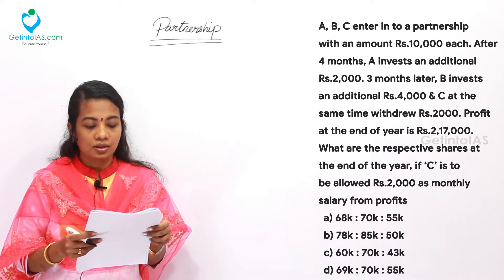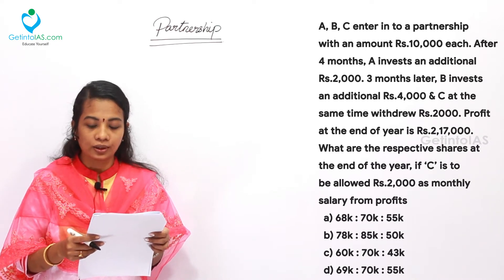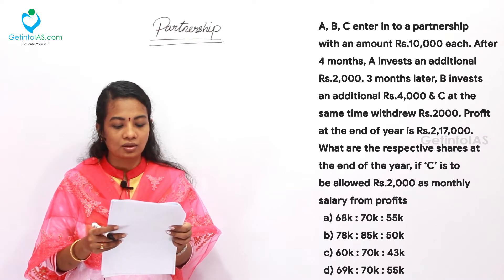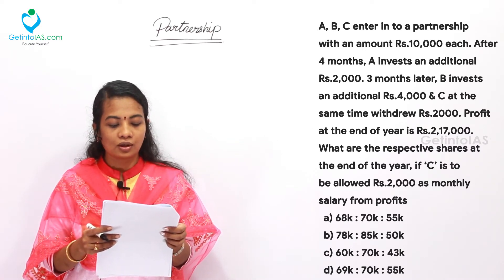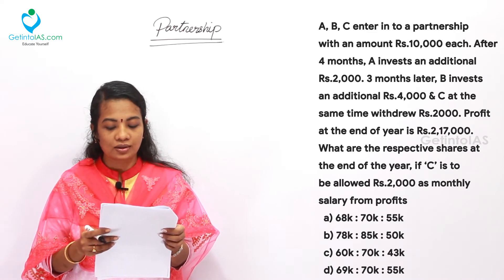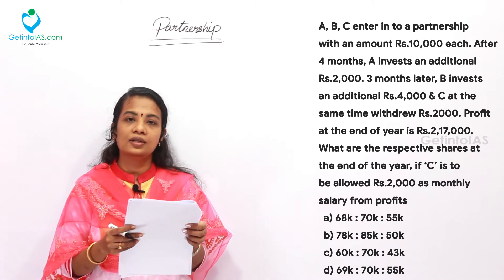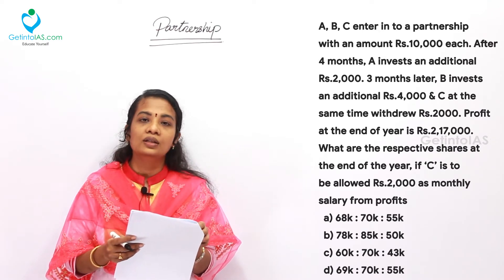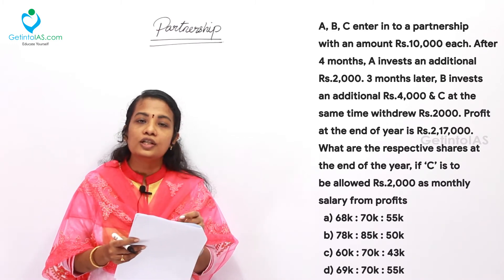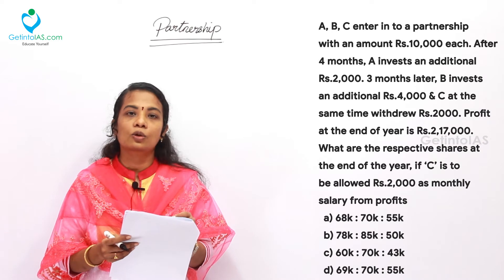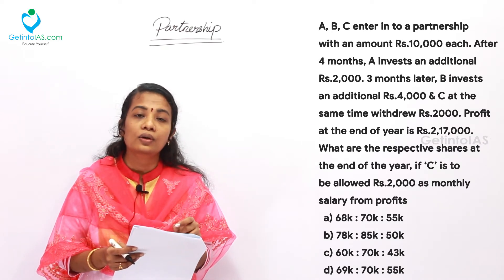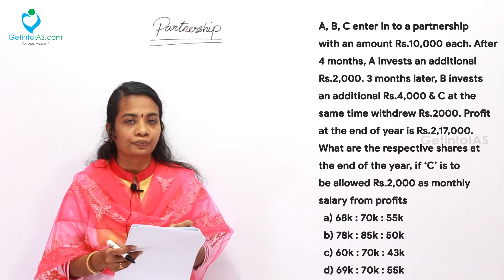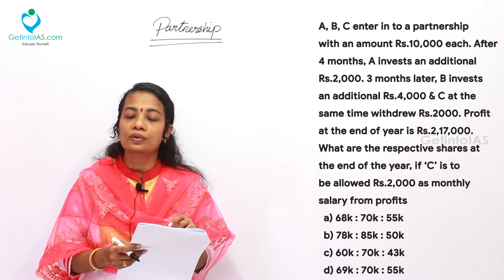Next question: A, B, and C enter into a partnership with Rs. 10,000 each. After 4 months, A invests an additional Rs. 2,000. Three months later, B invests an additional Rs. 4,000, and C at the same time withdraws Rs. 2,000. Profit at the end of the year is Rs. 2,17,000. C is allowed Rs. 2,000 as monthly salary from profit — so C is a working partner receiving Rs. 24,000 annually.